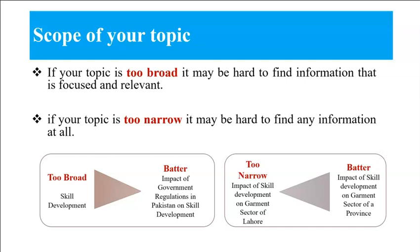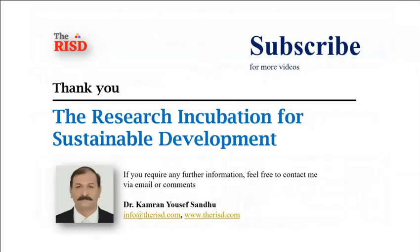This slide gives more information about the too broad or too narrow category. For example, 'skill development' is too broad — it does not give an exact boundary. If you narrow it down, you can write 'impact of government regulations in Pakistan on skill development.' We can also consider a narrow version like 'impact of skill development on the government sector of Lahore,' but a better option is 'impact of skill development on the government sector of a province' — so rather than focusing on a city, you can recommend a province.